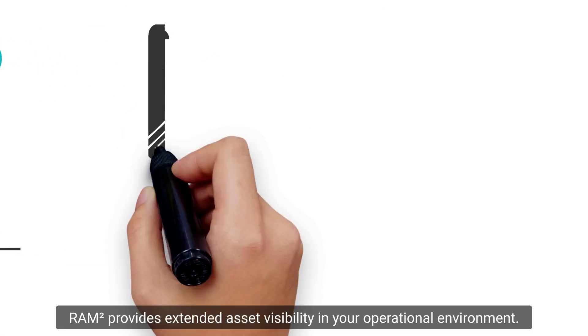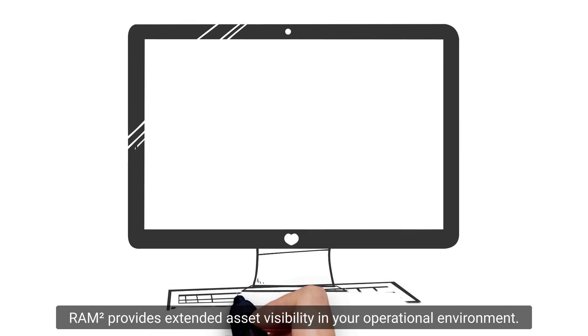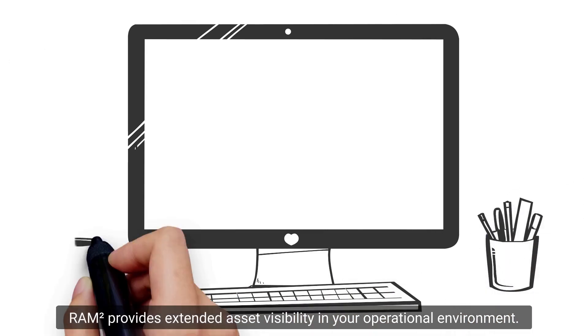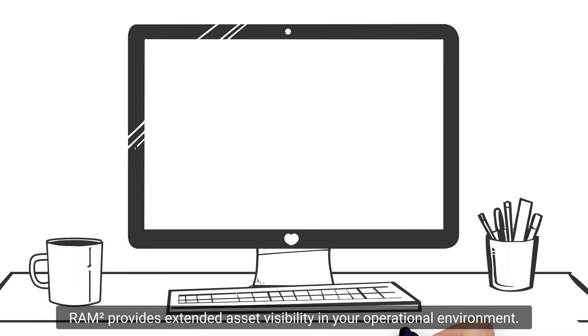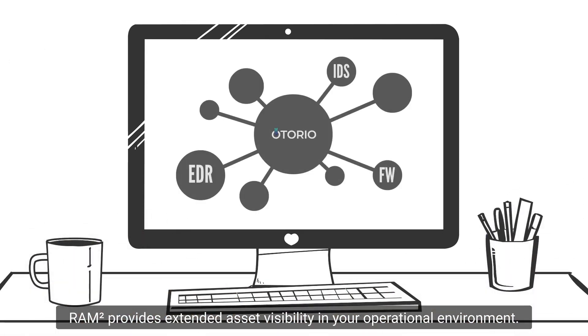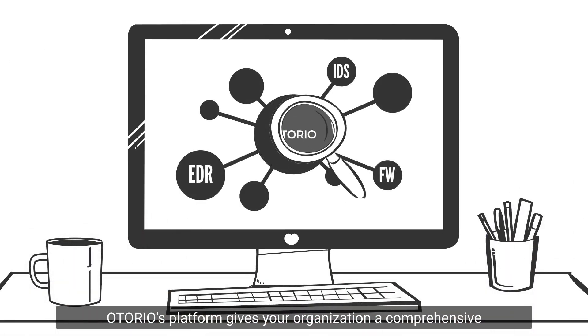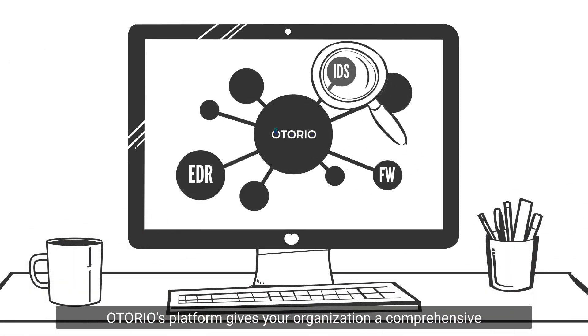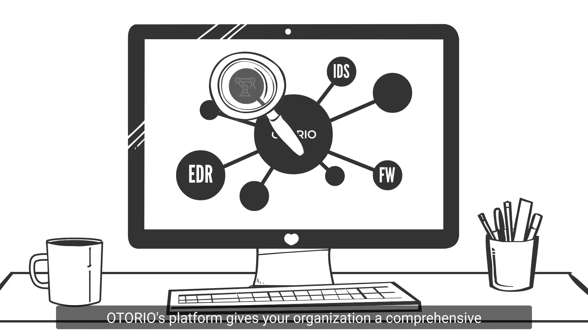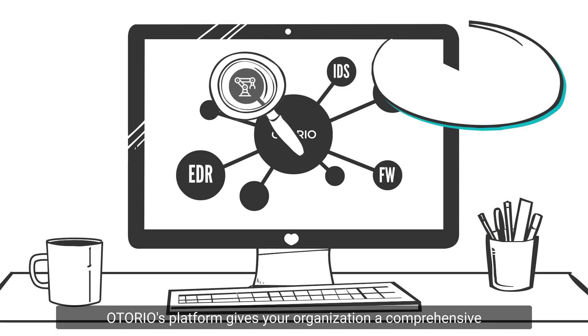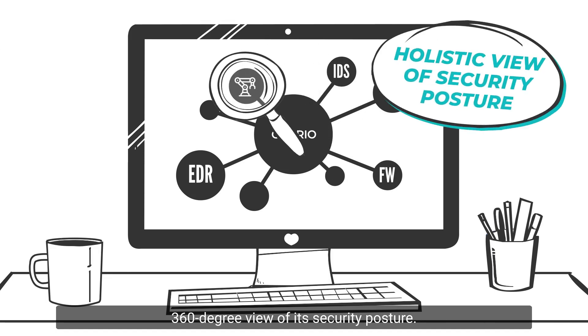RAM Squared provides extended asset visibility in your operational environment. Otorio's platform gives your organization a comprehensive 360-degree view of its security posture.